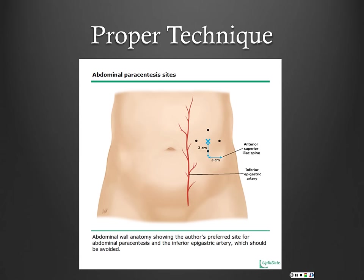Always look for superficial venous collaterals before you insert your needle. The risk of bleeding is very low in these patients, but if you hit a superficial vessel that can cause trouble. For a diagnostic paracentesis, you can usually use a 21- or 22-gauge needle. An inch and a half will reach the peritoneum on most people, though you may need a slightly larger needle for a very obese person.